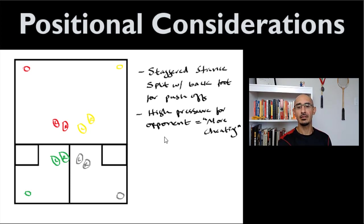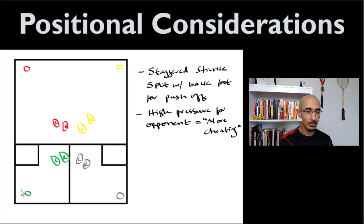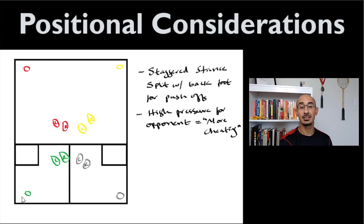If you have your opponent under a lot of pressure — say they're really under pressure with a tight length and their only shot is a boast — instead of standing at the standard green position, you might slowly gravitate closer to the front right corner just before they hit. Similarly, if the only shot they ever hit from the back left is a straight drive, you might shift over in that direction to hedge your bets.